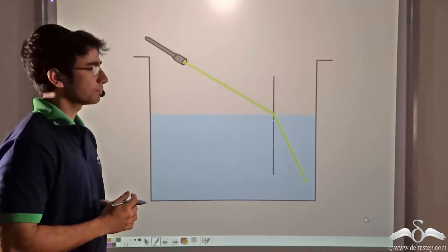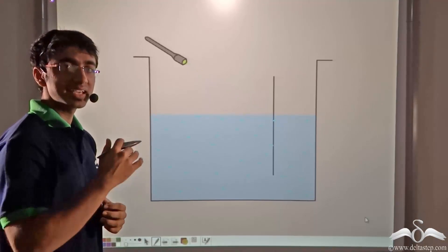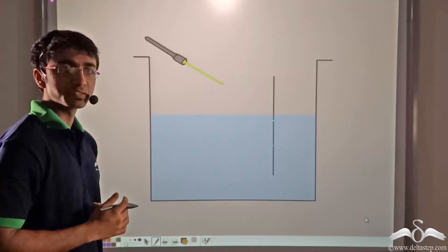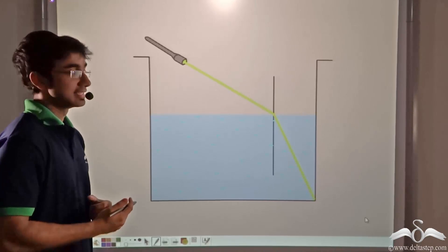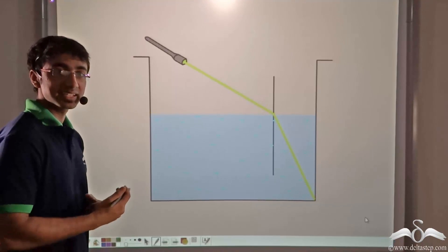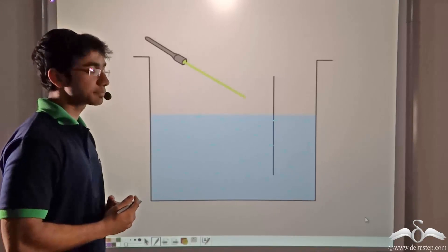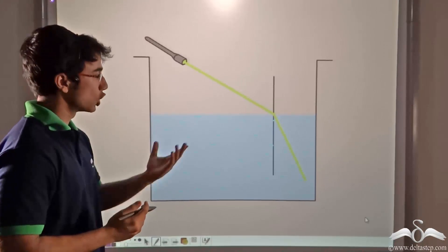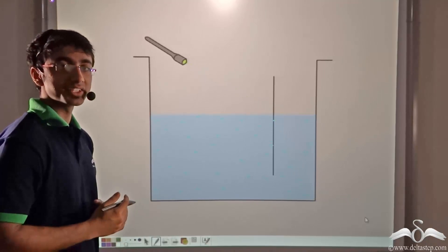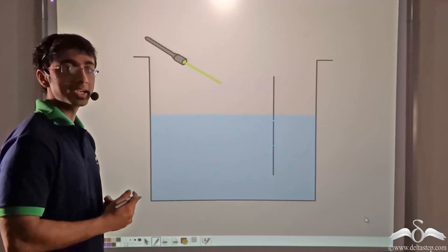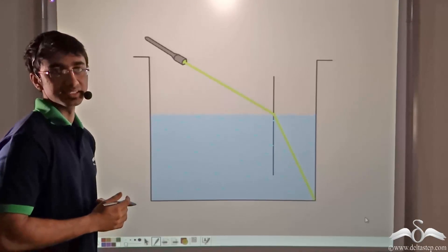You will notice that when the beam of light hits the air-water interface, it undergoes refraction. Since water is denser than air, the refraction takes place towards the normal. In other words, the refracted ray is bent towards the normal at the point of incidence.